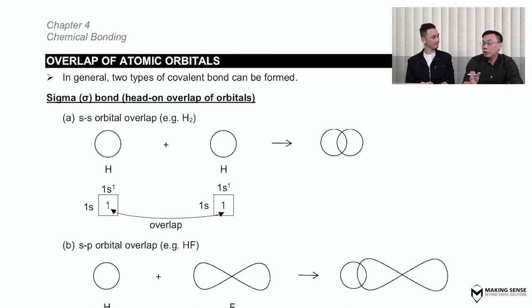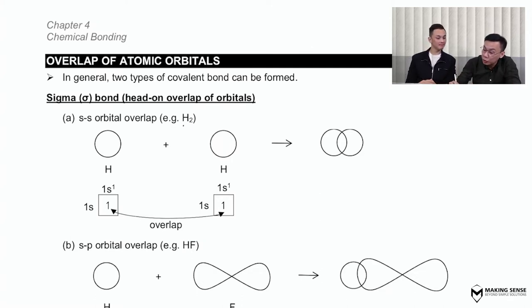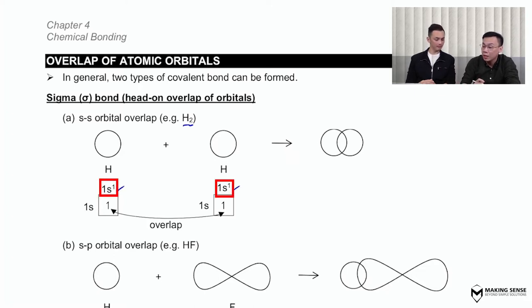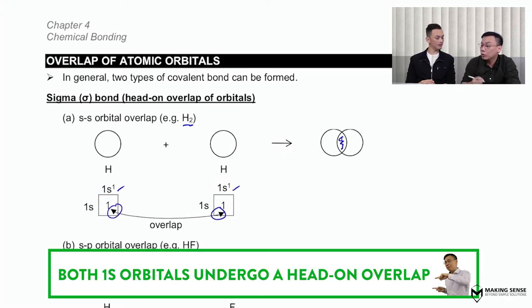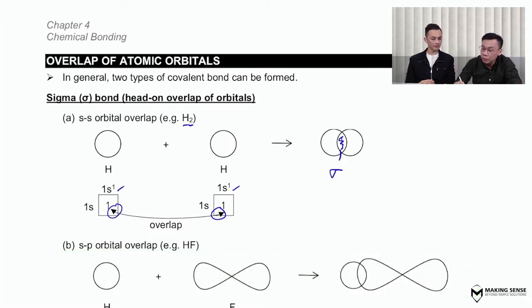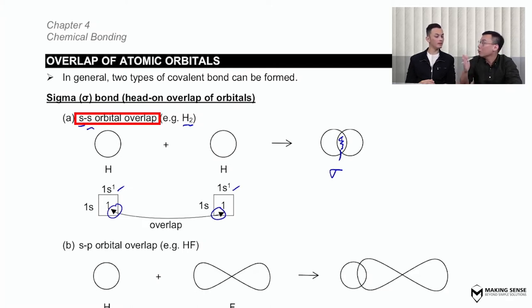In terms of a sigma bond, different types of orbitals can be involved, just like in a head-on car crash, different types of vehicles can be involved. For the H2 molecule, the first thing you do is write down the electronic configuration of the individual atoms. Hydrogen only has one valence electron, so the electronic configuration is 1s1. The two s orbitals of the hydrogen atoms will overlap with each other, forming a region of overlap. So this sigma bond is formed between an s orbital of one hydrogen and the s orbital of another hydrogen — what we call an s-s orbital overlap.